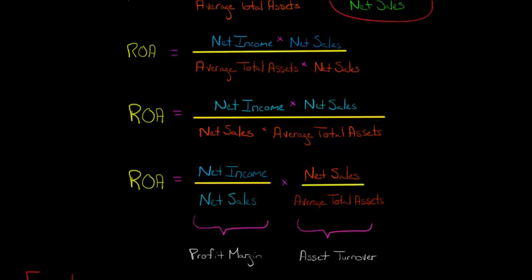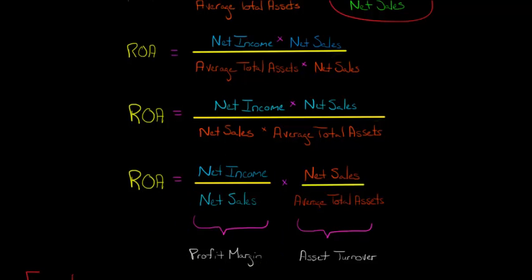Profit margin tells us that for every dollar of net sales, some portion ends up in net income — for example, 8 cents for every dollar if the margin is 8%. And then we have the other ratio: net sales divided by average total assets.